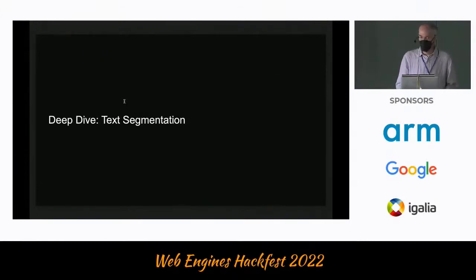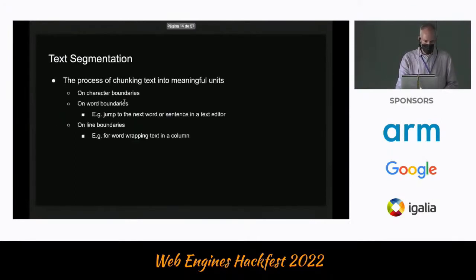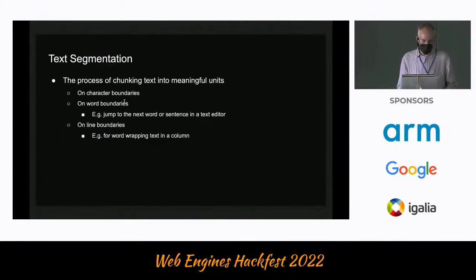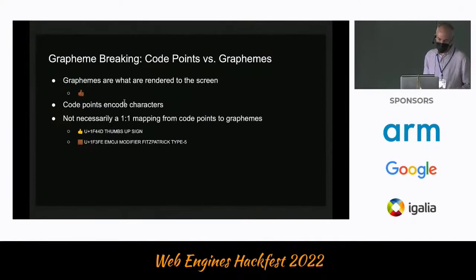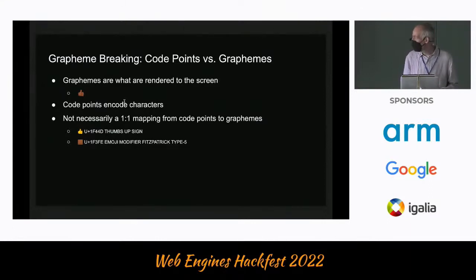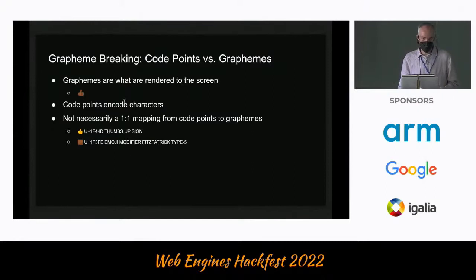With that, I'd like to talk in a bit more detail about text segmentation — the process of chunking text into meaningful units. It can be done at character boundaries, word boundaries (for example when jumping from one word to another in a text editor), or line boundaries for laying out text inside a column. The first example is grapheme breaking. To understand this you need to understand the difference between a code point and a grapheme. Graphemes are essentially what is rendered to the screen — a thumbs up sign may be one grapheme but multiple code points. In this case, the thumbs up sign is actually a thumbs up plus a skin tone modifier, and beyond emoji there are also use cases in languages that add diacriticals to fonts.